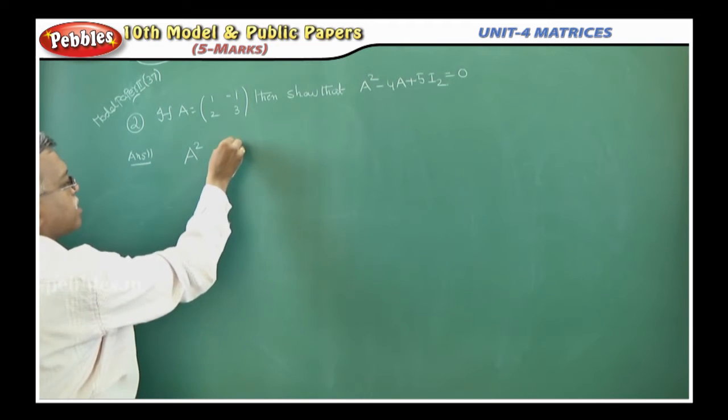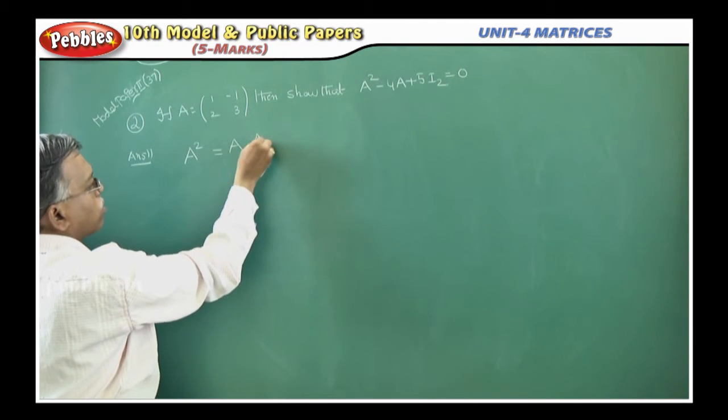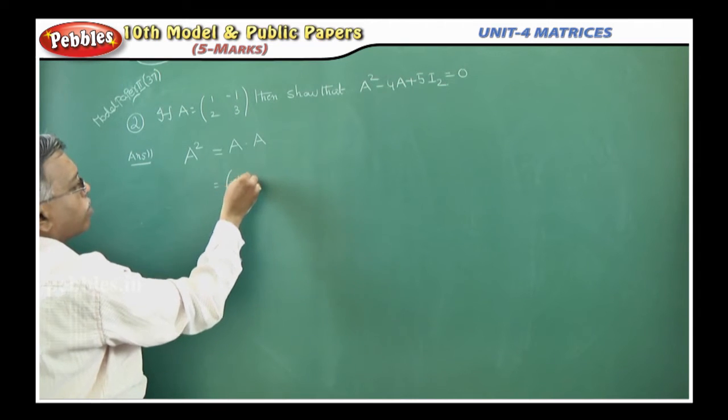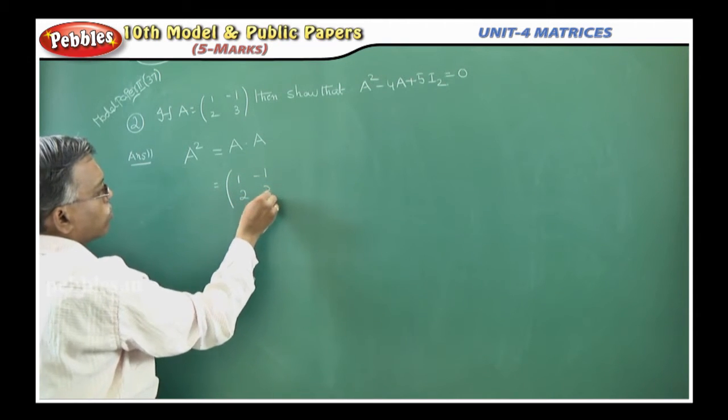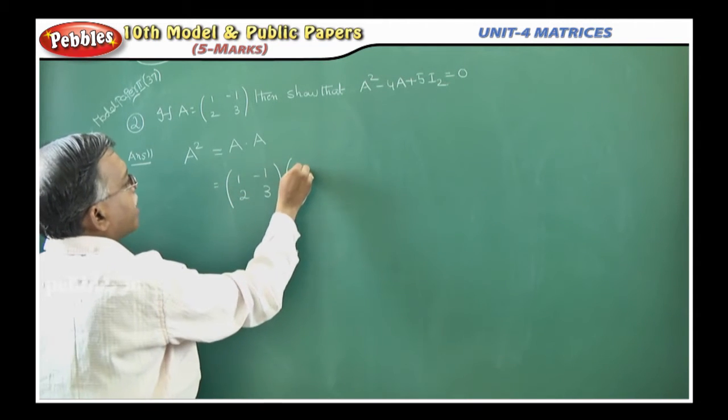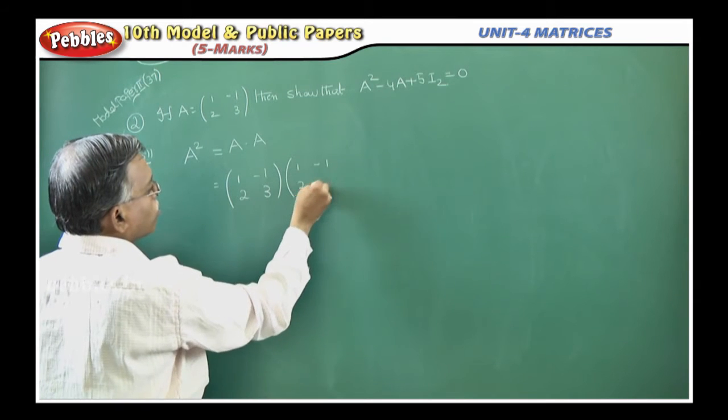A square in general, I can write it as A into A. What is A matrix here? 1 minus 1, 2, 3. Again A matrix, again 1 minus 1, 2, 3.